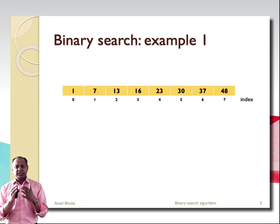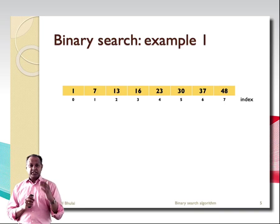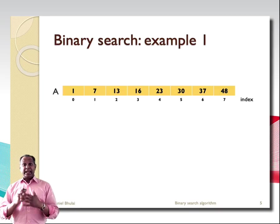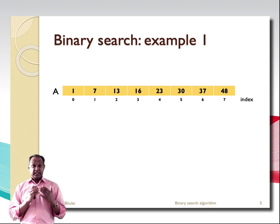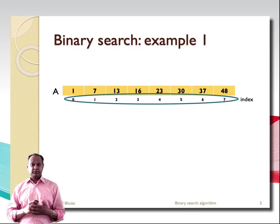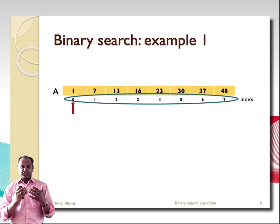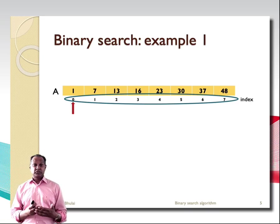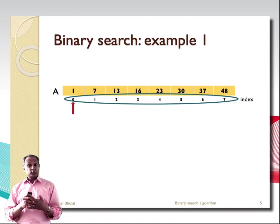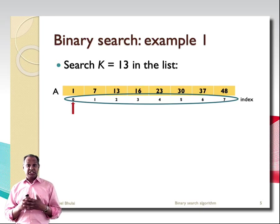To see the binary search algorithm in action, we illustrate this with an example. Consider the following sorted list — let's call it list A. The numbers below the list are the index numbers giving the position of the values. Note that we start counting at 0 for positions, as is common in computer science for lists and arrays. Now suppose we want to search for number 13. So our search key is 13.